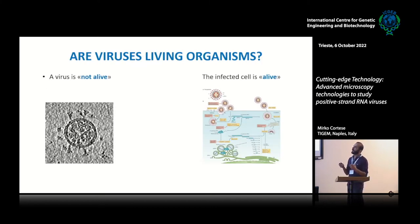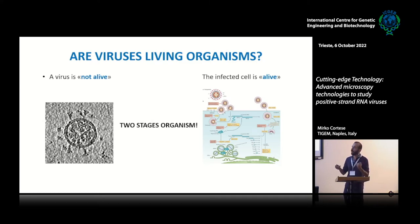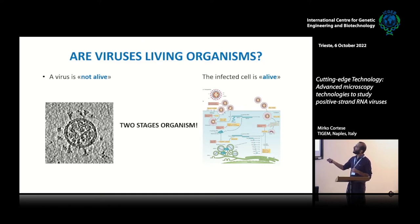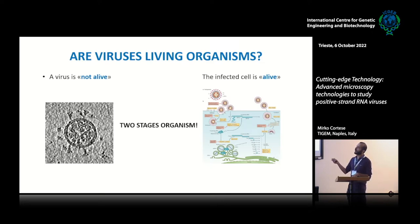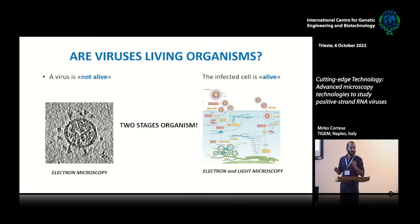What all viruses require is that they need cells to replicate — they are all obligate intracellular parasites. We can think of viruses as organisms with two stages. The virion observed by electron microscopy is not alive because it cannot reproduce without cells. But when the virus interacts with the host and enters cells, it creates a new entity — a factory that produces novel viruses. This entity is alive. So we can consider viruses as a two-stage organism, mostly analyzed by electron microscopy.